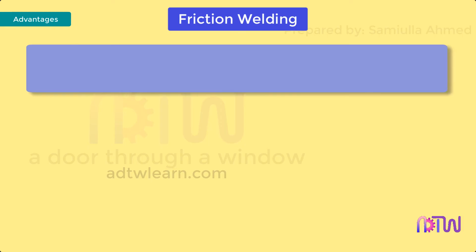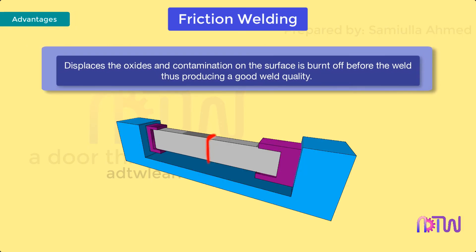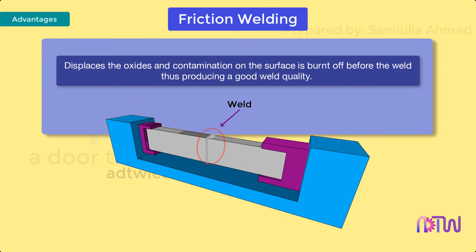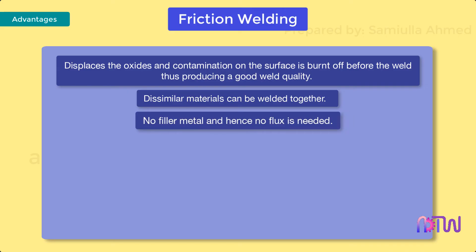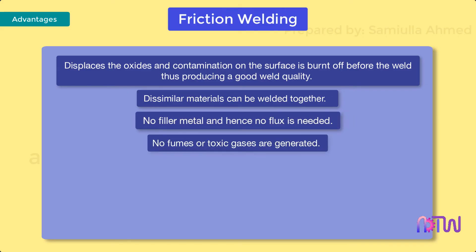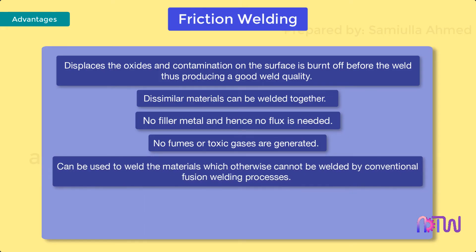Advantages: since the two surfaces move relatively, the relative motion displaces oxides and contamination on the surface, which are burned off before the weld, producing good weld quality. Dissimilar materials can be welded together. No filler metal is needed, and hence no flux is required. No fumes or toxic gases are generated. The process can be used to weld materials which otherwise cannot be welded by conventional fusion welding processes.